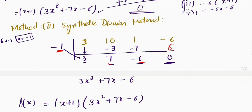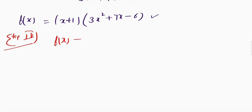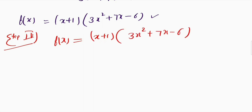Both the long division method and the synthetic division method give the same result. Step 4 is the same for both methods. We now know f(x) = (x + 1)(3x² + 7x − 6). We will solve this quadratic equation using the midterm split method.